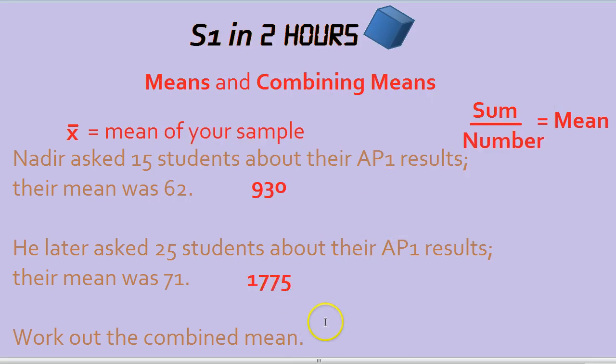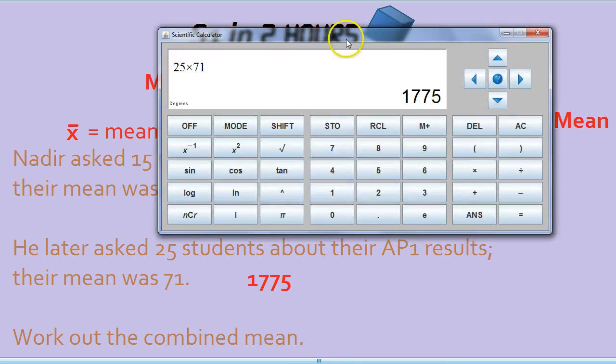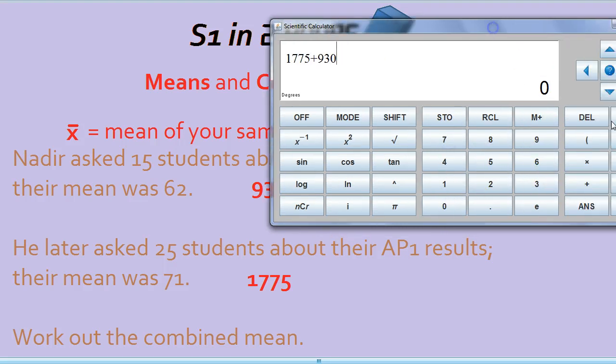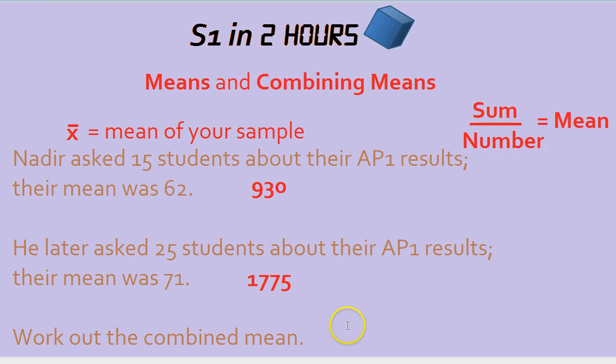Now what we do to find the combined mean is simply find the combined total and divide by how many students. The combined total is 1775 plus 930, and then that number divided by the 40 students, which is 67.6. So the combined mean is 67.6.